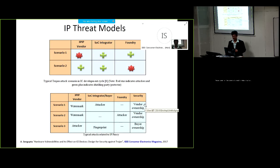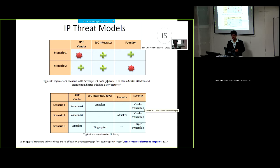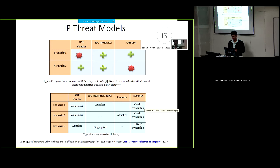Looking at the first IP threat model: the first scenario is where the attacker is the third-party IP vendor himself, or there could be an adversary present in the third-party IP vendor house, who inserts without the system integrator's knowledge some malicious alterations of the IP design such that when integrated it creates unwanted functionality, such as leakage of confidential information or change in functionality. The green marks are the trusted sources and the third-party IP vendor is considered the attacker.